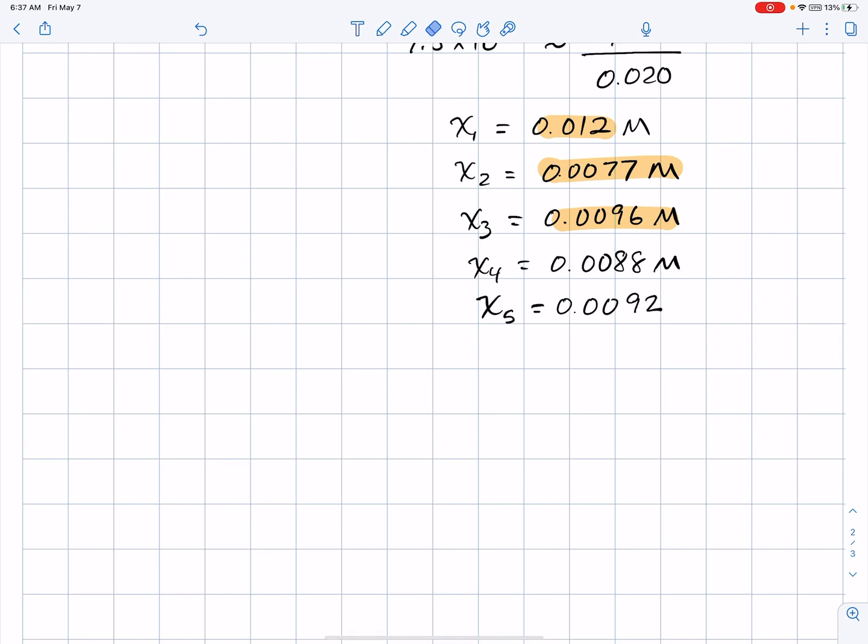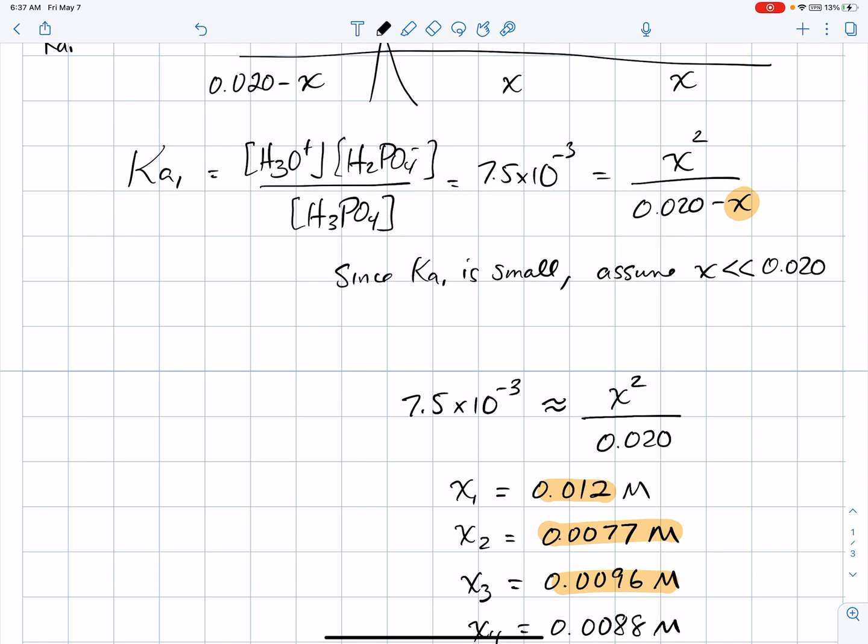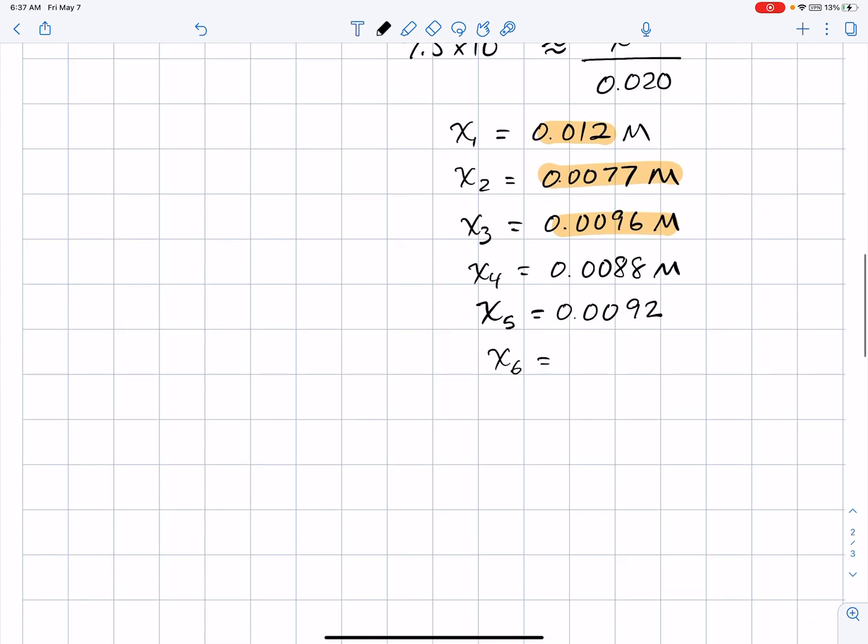So, we're getting closer and closer together. I'm going to continue until I get the answers staying constant. One more time, 0.02 minus 0.0092 times by the Ka, and square root the answer, and I think maybe just one more time. A seventh approximation, 0.02 minus this guy, times the Ka, and square root the answer. Yes, and we're done. So, my rule of thumb is to stop when the last digit changes by just one, or it doesn't change at all. So, 0.0091 is our final answer with this method of approximations.